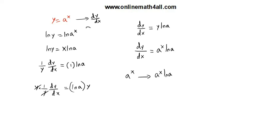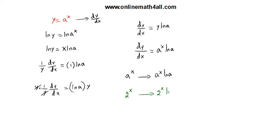So the derivative of a to the power x is just a to the power x times ln a. Instead of doing the derivation every time, we can remember this as a formula: the derivative of a to the power x is equal to a to the power x times ln a, where the base is a constant and the exponent is a variable. For example, the derivative of 2 to the power x is 2 to the power x times ln 2. Similarly, the derivative of 5 to the power x is 5 to the power x times ln 5.